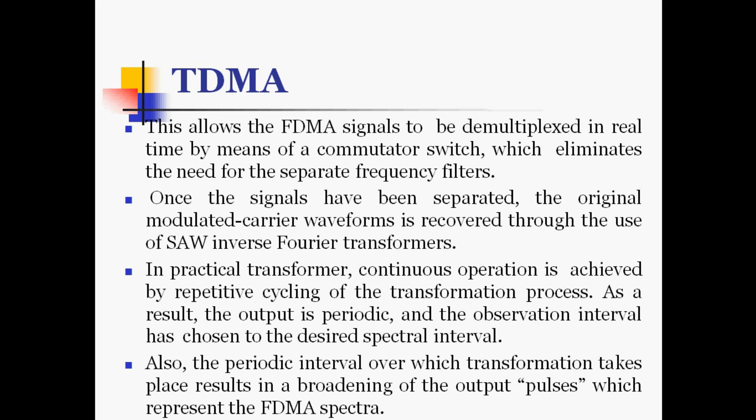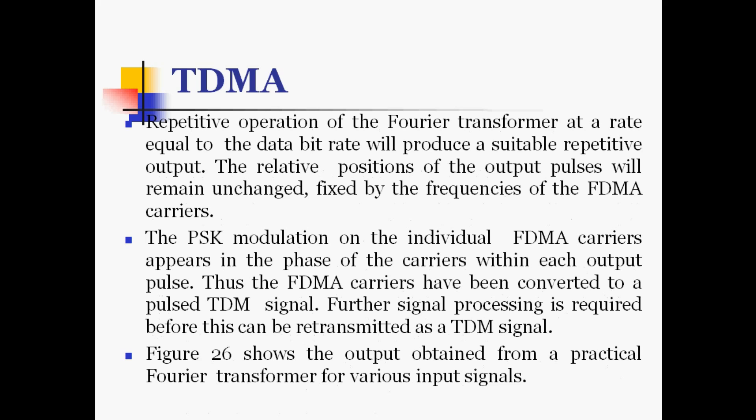When the input is a group of FDMA carriers, the output in the ideal case is an analog of the FDMA frequency spectrum. This allows the FDMA signal to be demultiplexed in real time by means of a commutator switch, eliminating the need for separate frequency filters. Once the signals have been separated, the original modulated carrier waveform is recovered through the use of SAW inverse Fourier transforms. In practical transformers, continuous operation is achieved by repetitive cycling of the transformation process, resulting in a periodic output.